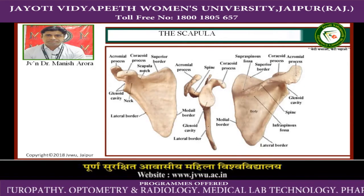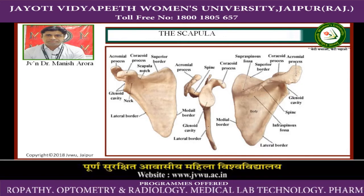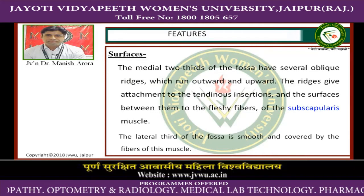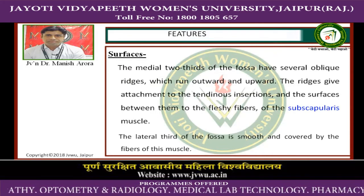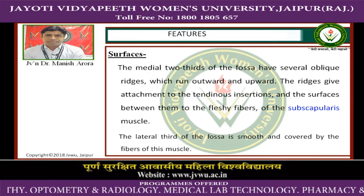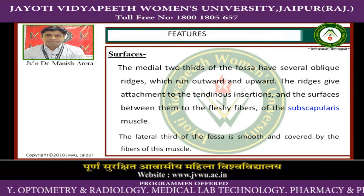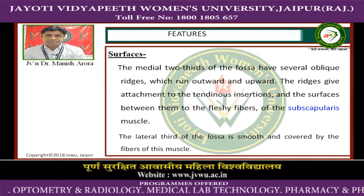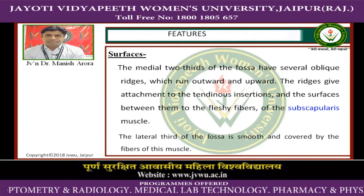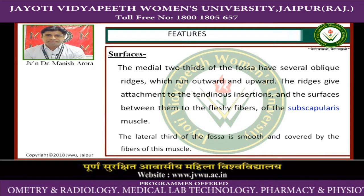Again, pictures of the scapula showing costal surface, dorsal surface and lateral view. Surfaces: The medial two-thirds of the fossa have several oblique ridges which run outward and upward. These ridges give attachment to the tendinous insertions, and the surfaces between them to the fleshy fibres of the subscapularis muscle. The lateral third of the fossa is smooth and covered by the fibres of this muscle.